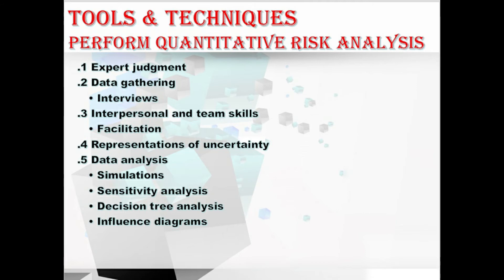The next technique is representation of uncertainty. Quantitative risk analysis requires inputs to a quantitative risk analysis model that reflects individual project risk and other sources of uncertainty. Where the duration, cost, or resource requirements for a planned activity are uncertain, the range of possible values can be represented in the model as a probability distribution. The most commonly used forms are triangular, normal, log normal, beta, uniform, or discrete distributions.